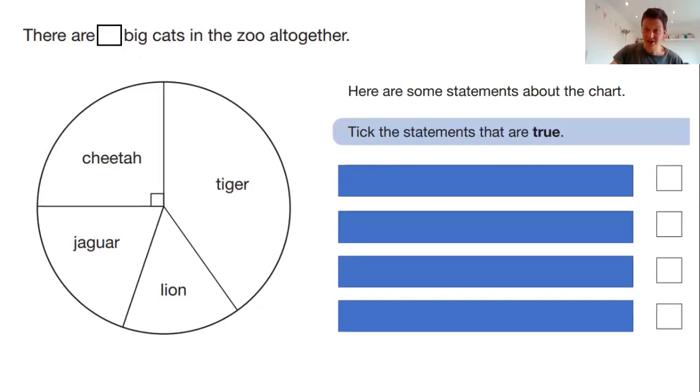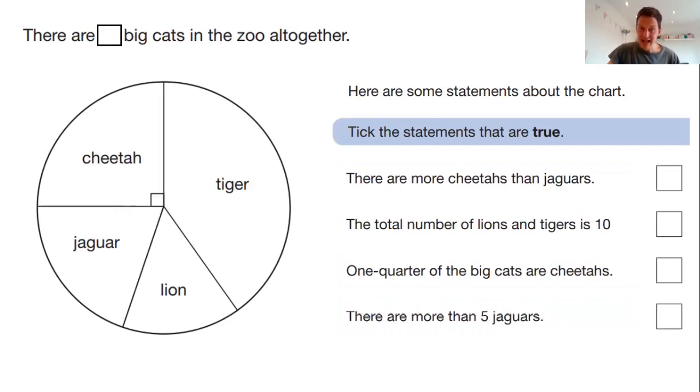Then I might introduce the question, but just cover up the statements. There are a certain number of big cats in the zoo. I've hidden the number and to ask children, what could those statements be? When they've thought of different possible statements, we can have a look at the actual statements there. And I could ask the children in this instance, which of these statements could already be answered? And we actually see that we can already answer two of those statements.